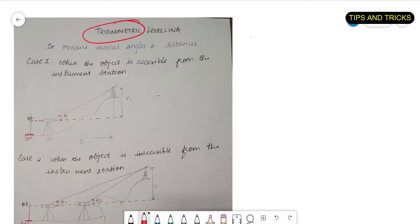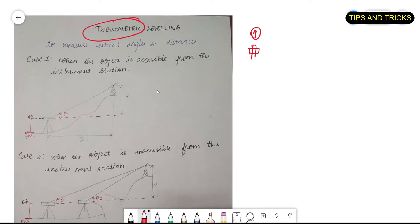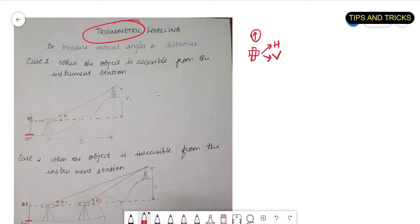We know that in a compass we can only find horizontal angles, but when we use a theodolite we can find both horizontal and vertical angles. In these cases we are going to use a theodolite to find the vertical angles. So let us look into Case 1 first.